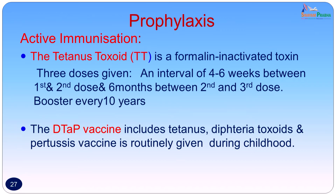Prophylaxis against tetanus can be given either as active or passive immunization. The active immunization uses tetanus toxoid — a formalin-inactivated toxin. Three doses are recommended: an interval of 4 to 6 weeks between the first and second dose, and a further interval of 6 months for the third dose. These are valid for about 10 years and a booster is recommended every 10 years. Tetanus immunization is usually given along with diphtheria and pertussis as the triple vaccine routinely given in childhood. If all childhood immunizations had been done, the patient would require only a booster dose.